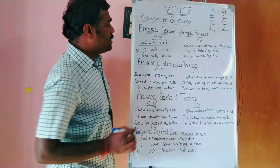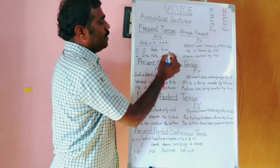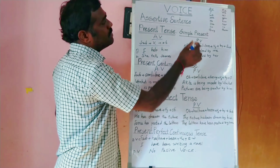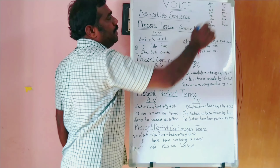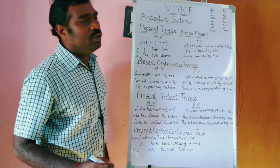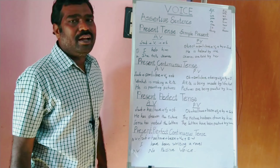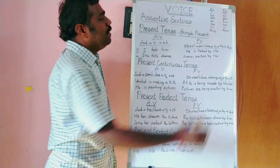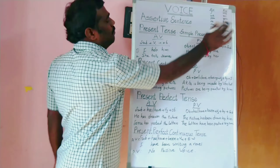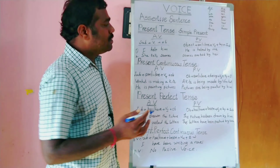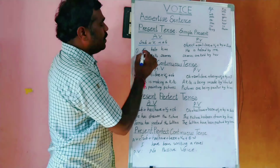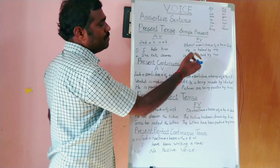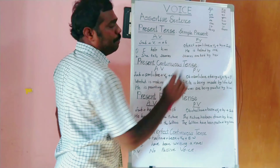For example, take one example: 'I help him.' In active to passive voice conversion — I becomes me, he/him becomes he, she becomes her, it stays it, they becomes them. So 'I help him' becomes 'He is helped by me.'